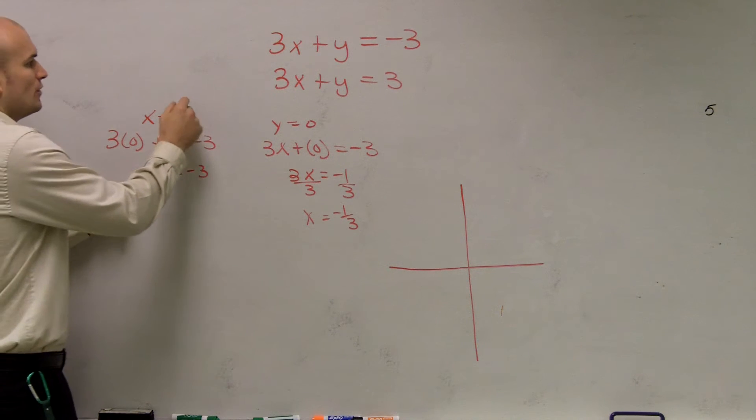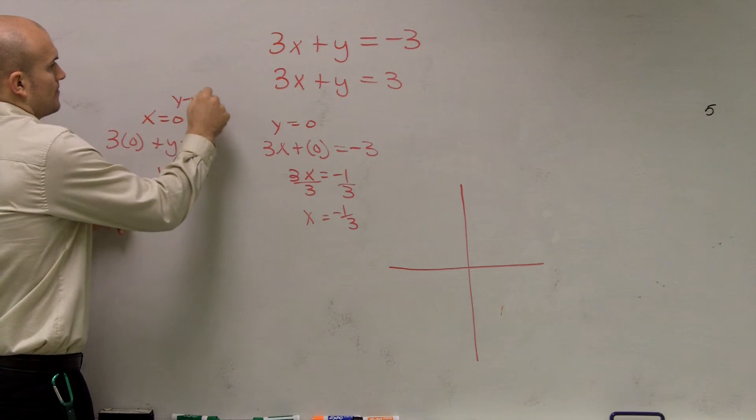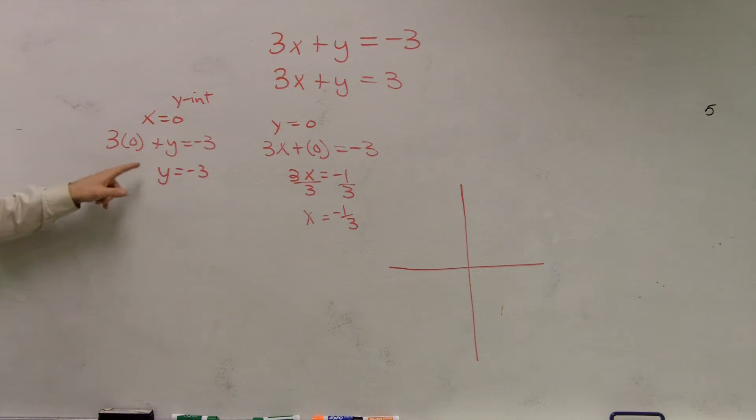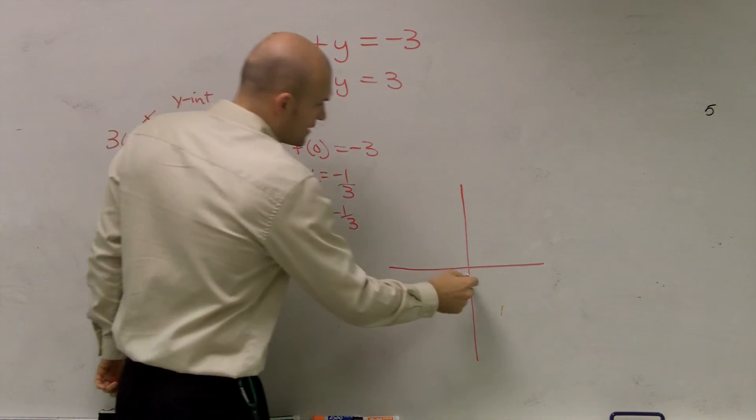So x equals 0 is what we call the y-intercept. So at the y-intercept, what you guys can notice is our graph crosses the y-intercept when y equals negative 3. So I go down to negative 3.